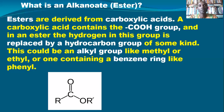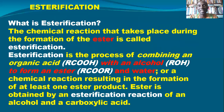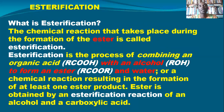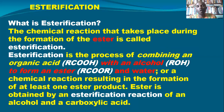How does the Ester form? It's formed by the process of what we call Esterification — a chemical process called Esterification. The chemical reaction that takes place during the formation of the Ester is called Esterification. It is the process of combining an alkanoic acid, which is an organic acid, with an alkanol — with alcohol — to form Ester and water.